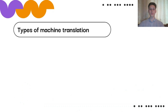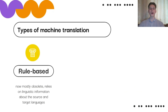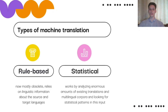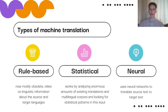Let's look at the types of machine translation. The first one is rule-based, which is now mostly obsolete, because it relies on linguistic information about the source and target languages. The next one is statistical, and it works by analyzing enormous amounts of existing translations and multilingual corpora, looking for statistical patterns. And the newest one is neural — it uses neural networks to translate source text to target text.